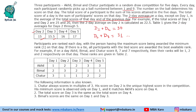Participants are ranked each day with the person having the maximum score being awarded rank one on that day. If there is a tie, all participants with the tied score are awarded the best possible rank. You can see that 2-2 is written in the table, which means Akhil and Bimal got the same score on day 3. For example, if on a day Akhil, Bimal, and Chatur score 8, 7, and 7 respectively, their ranks will be 1, 2, and 2. These ranks are given in Table 2 — we are given the ranks, not the points.